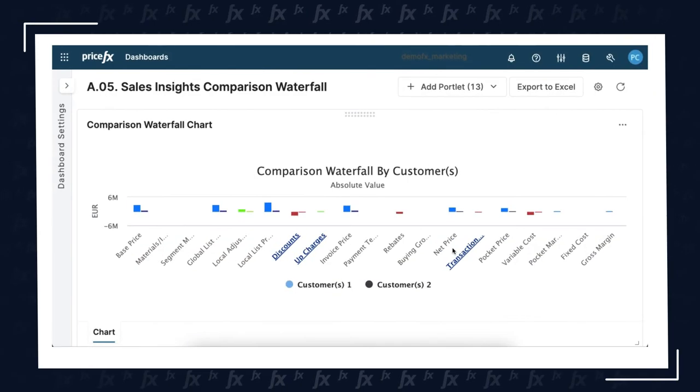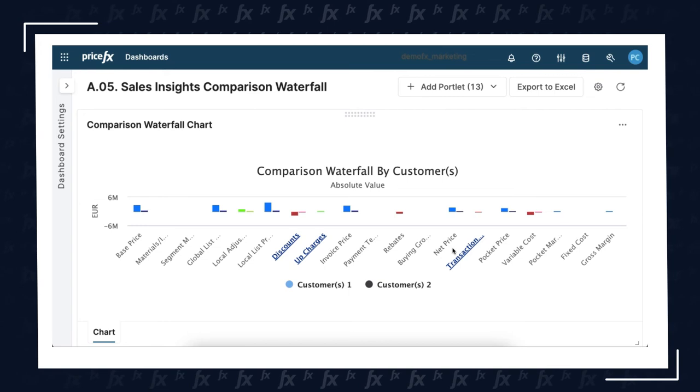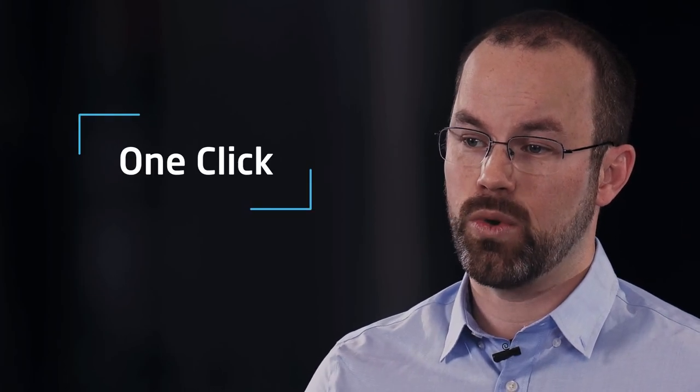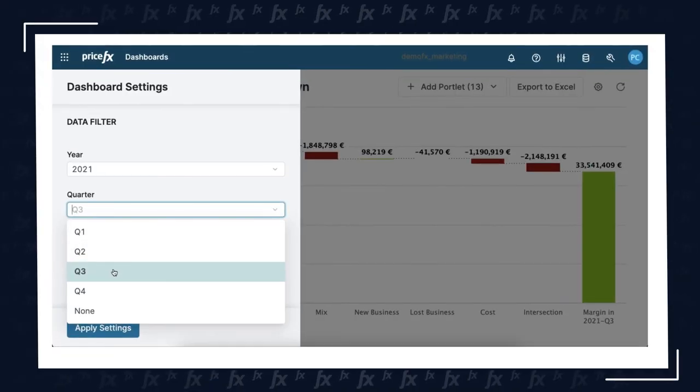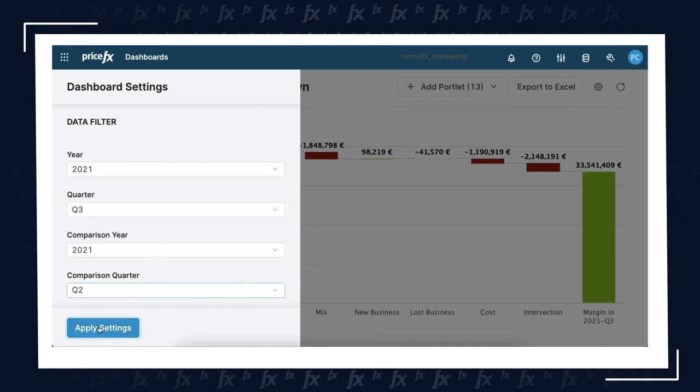In addition to revenue and margin breakdown, pricing waterfalls, and customer insights, one of the most powerful analyses that we look at with our customers is the comparison waterfall. This is where you can take two individual customers, or even two individual products, look at them side by side, and better understand the areas of the waterfall where there are differences, and how you can gain insights and make better business decisions based on these comparisons. And the best part of all of these analyses is that it's all configurable with just one click. With one click, you can change filtering, or you can even change the scope of your analysis to start looking at other types of insights that you can gather for your company.